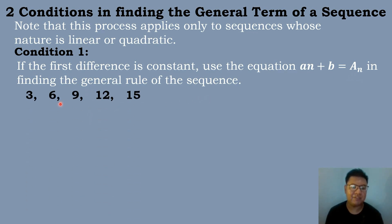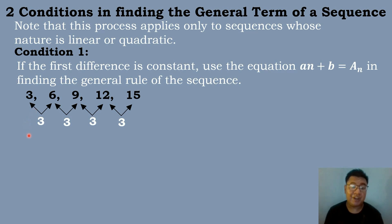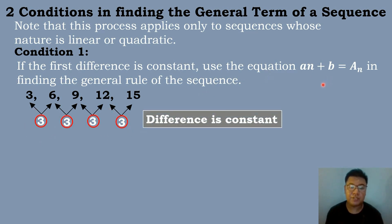For example, we have the sequence 3, 6, 9, 12, 15. We will get the difference of the second term minus the first term: 6 minus 3 is equal to 3. Then the third term minus the second term: 9 minus 6 is equal to 3. The fourth term minus the third term: 12 minus 9 is equal to 3. And 15 minus 12 is also equal to 3. So if the difference is constant, we'll be using the equation a times n plus b is equal to a sub n.